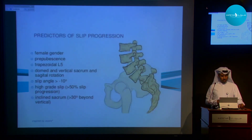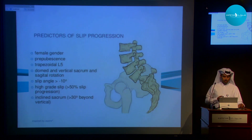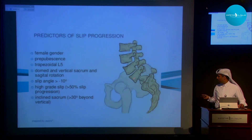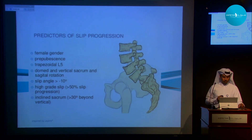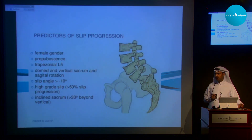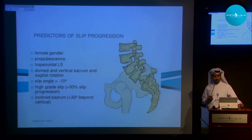There are certain predictors for slip progression, including female gender, injury before pubescence, a trapezoidal shape of the L5 vertebra, a domed and vertical sacrum which is more prone to progression, a slip angle greater than 10 degrees, and higher grades of slip are more likely to progress.